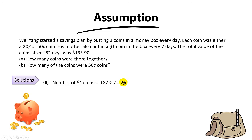There are 26 groups of seven days in 182 days, which means there are 26 one-dollar coins in total — because every seven days his mother puts in one one-dollar coin, so over 26 groups there will be 26 one-dollar coins. Now, Wei Yang also puts in two coins every day, so the number of coins Wei Yang put in is 182 times 2, which equals 364 coins.